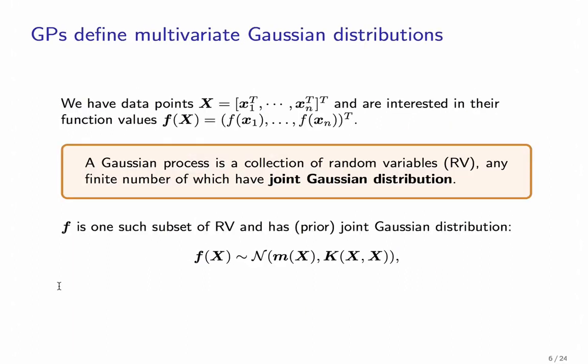So we said earlier that a function is basically an infinitely long vector, which means that a Gaussian process is basically a multivariate normal with an infinite number of dimensions. However, we can't really work with an infinite number of dimensions. And we are saved by a property of the multivariate Gaussian.